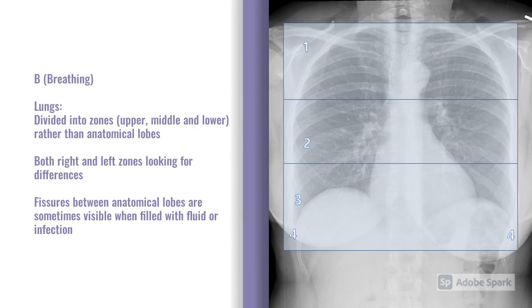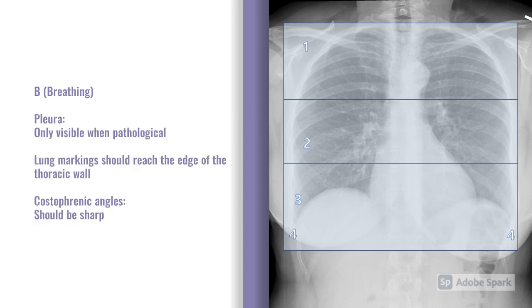Moving on to B — breathing. Don't talk about lobes when looking at chest x-rays; we use the term zone because lobes overlap. So you have upper zone, mid zone, and lower zone. Check both sides, looking for any obvious differences — ideally both sides should be similar density. In the mid zones you can sometimes see the fissures between lobes; if highlighted, they're probably filled with fluid or infection. Also look at the pleura: ideally we want lung markings reaching the edge of the thoracic wall. If they're not, that's probably due to a pneumothorax. The costophrenic angles should be nice and sharp; if not, probably filled with fluid or infection.